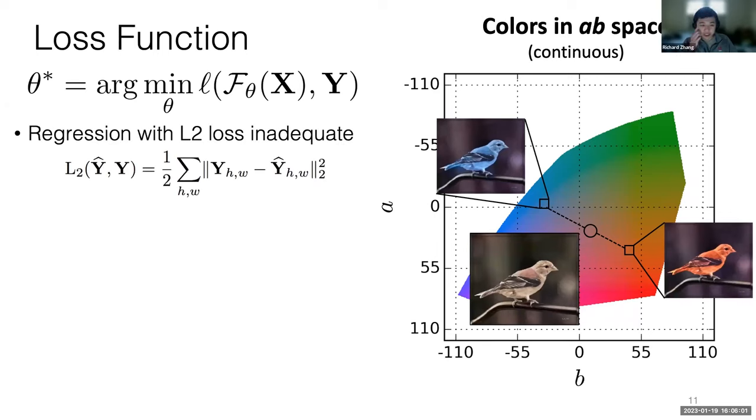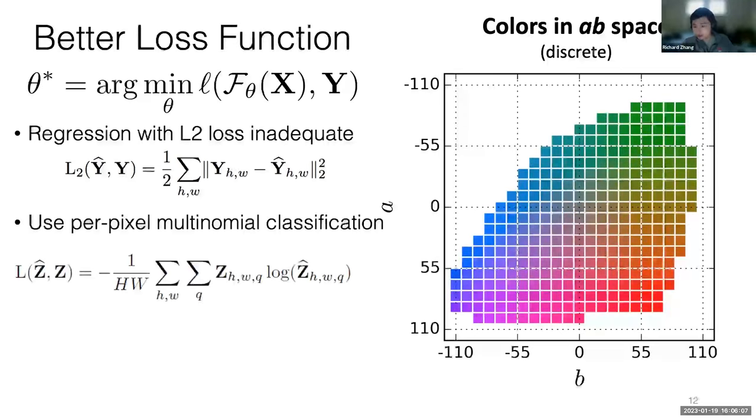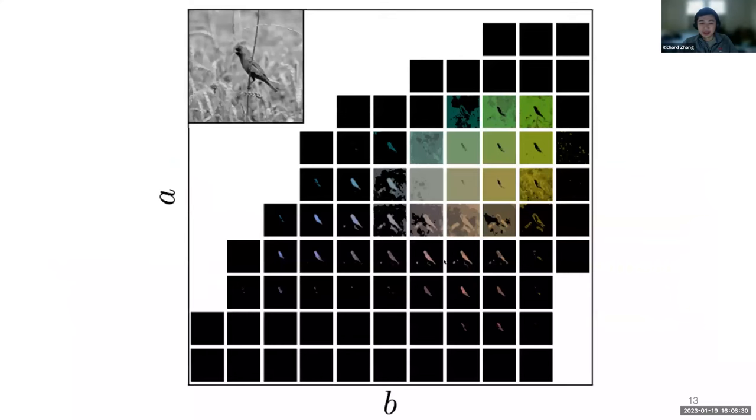That's why you get something that's kind of desaturated and in the middle here. That just shows that regression with L2 is kind of inadequate. So what we did was we broke the problem up into multinomial classification. We divided the output space into a whole bunch of bins, like little 10 by 10 bins. We converted this regression problem into classification. Instead of predicting a single color for every single pixel, we instead predict the distribution of possible colors that it could be.